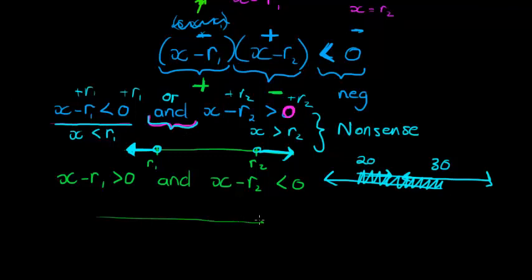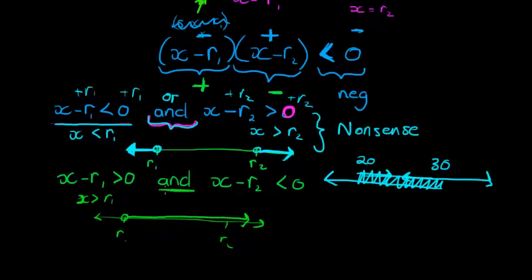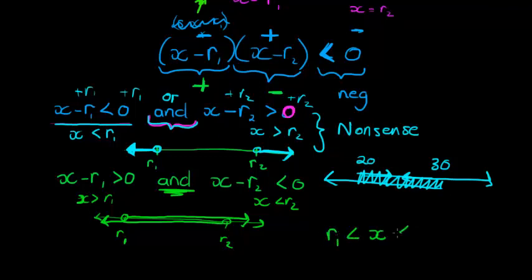Let's look at the second solution. We have r1 here and r2 there. We say x is larger than r1 AND x is smaller than r2 — using the same linear methods, adding r1 and r2 to both sides. That's a compound inequality: x > r1 AND x < r2, which represents the interval between r1 and r2. That is a valid solution — the interval right between these two values.